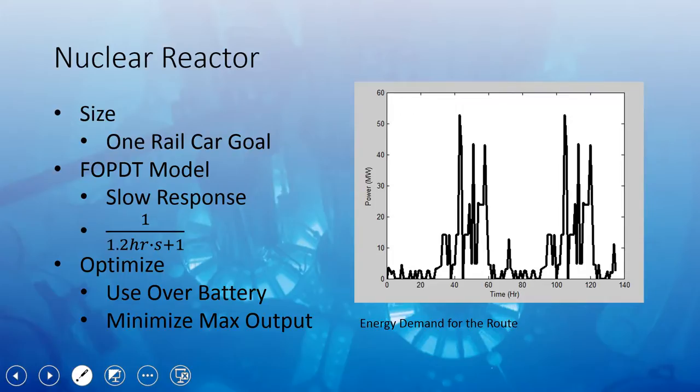When we optimized it, we wanted the optimizer to prefer that over the batteries to make sure that we were using the nuclear as much as possible. And we wanted to minimize the actual size of the nuclear reactor. So by doing that we minimize the maximum output. We were trying to make it fit this curve that you can see to the right, which was the combination of the height profile, velocity profile, all in that energy balance. And we ended up with a nuclear reactor that was about three to four rail cars in size.